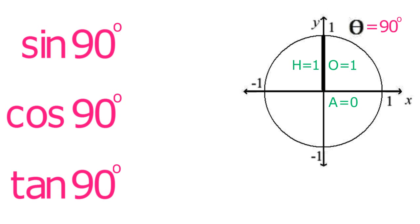For example, the sine of 90 degrees equals opposite over hypotenuse, or 1 over 1, which equals 1.